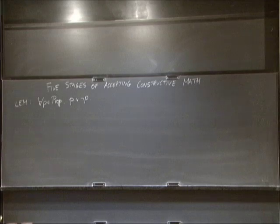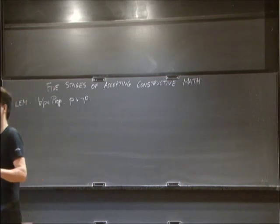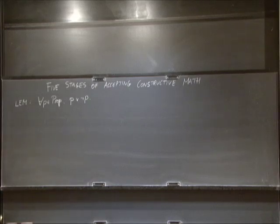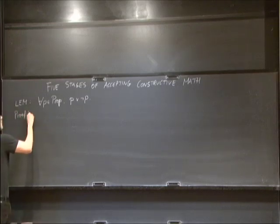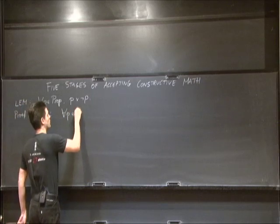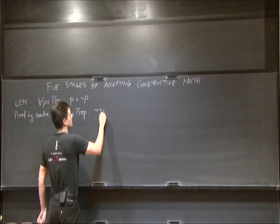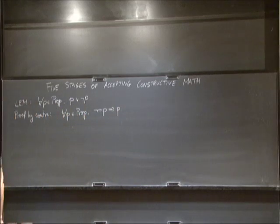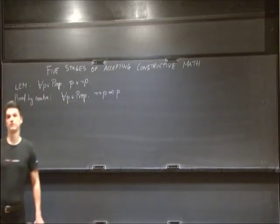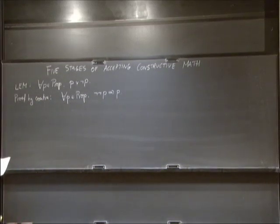Abstaining from LEM can create quite a bit of anxiety. There is an equivalent form called proof by contradiction, or the double negation law, which says: for every P in Prop, not-not-P implies P. I'm mentioning this because mathematicians call two things 'proof by contradiction' and they are really different — not at all the same.